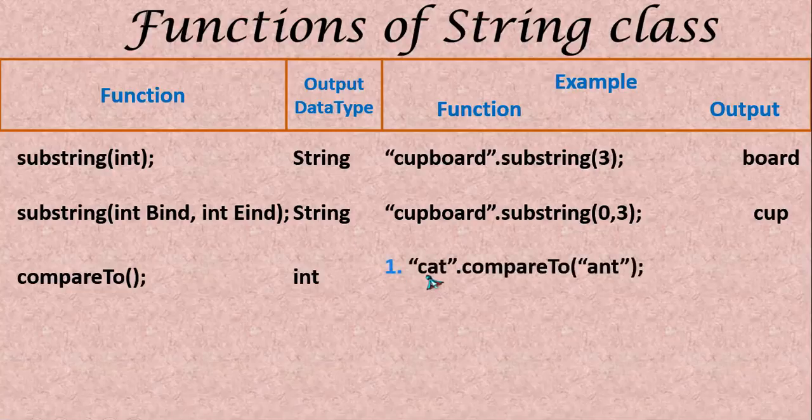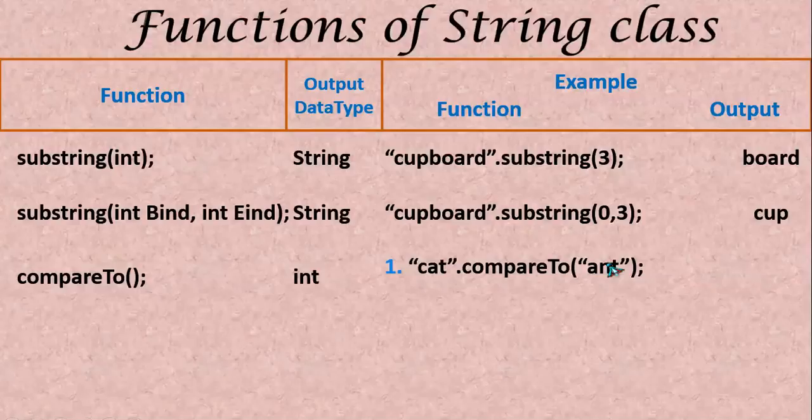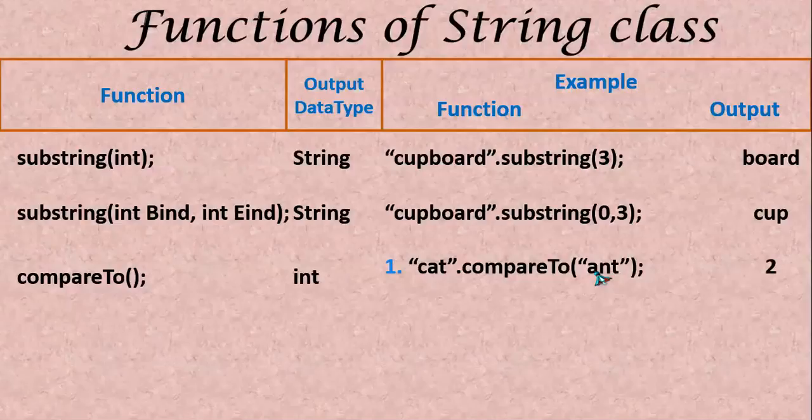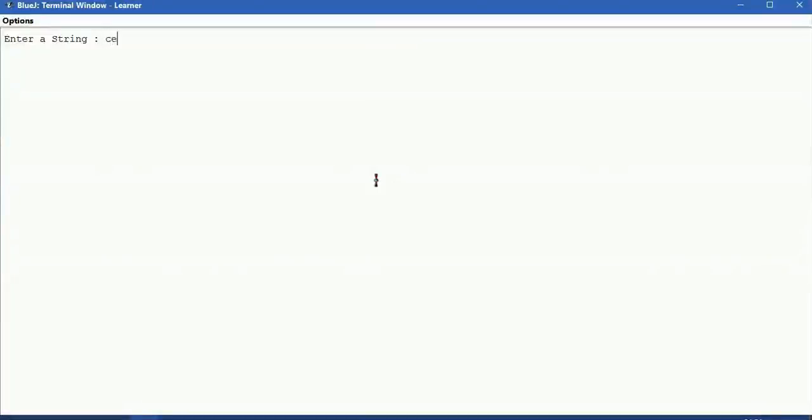Here I have cat compared to ant. It is totally different. The first letter it is going to be c and then here a. The difference going to be these two is 2. The next one here cell phone dot compare to cell pouch. Here minus 7 is answer. Until c e l p it is same and then here h and here o is compared. Here h is having smaller value o is having bigger value. It is in minus value.